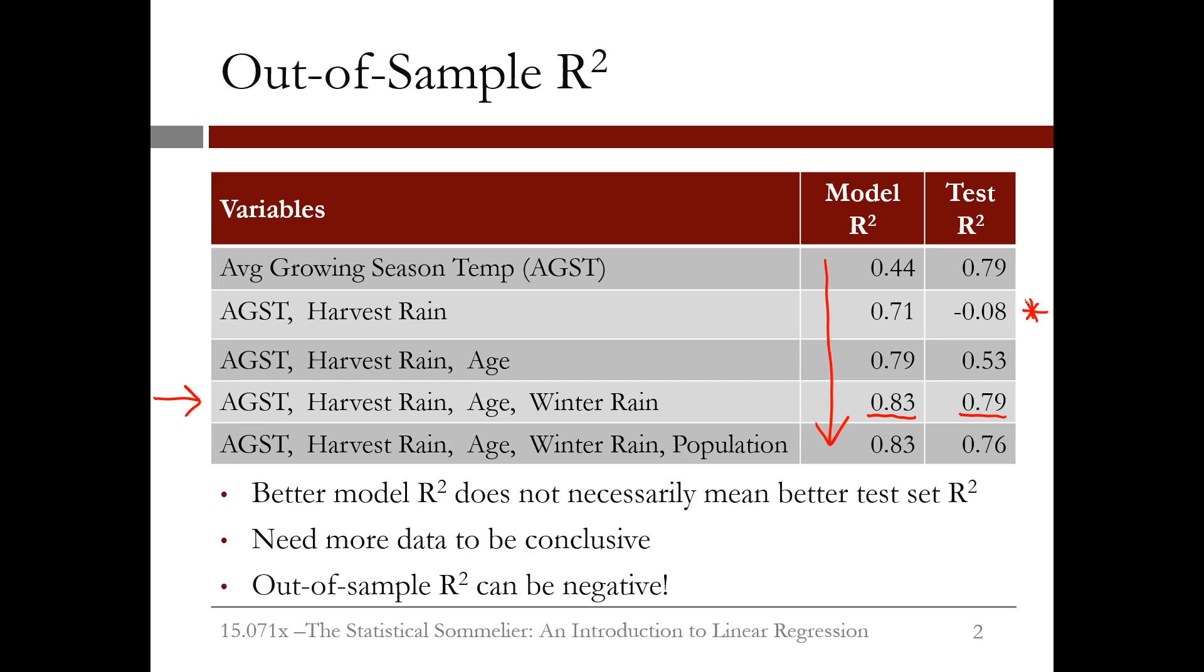But it looks like our model with average growing season temperature, harvest rain, age, and winter rain beats the baseline model. We'll see in the next video how well Ashenfelter did using this model to make predictions.